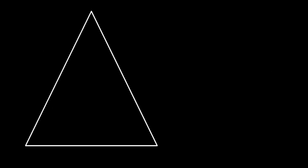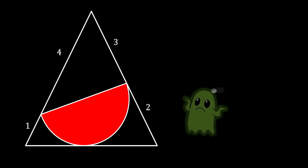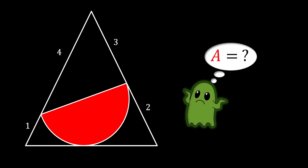In today's problem we have a triangle, and we will inscribe a half circle into this triangle. We will tilt this half circle so that it's splitting the left and the right side of the triangle into segments with the length of four and one, and three and two, as shown in the sketch. The question is: can we somehow calculate the shaded area of this red half circle?